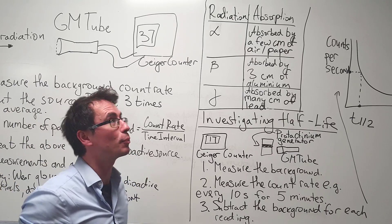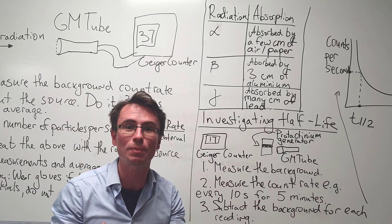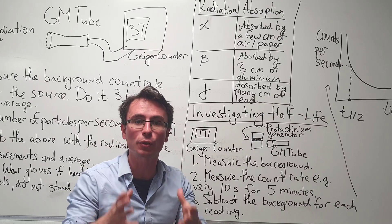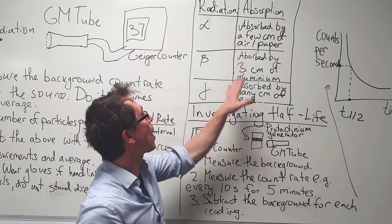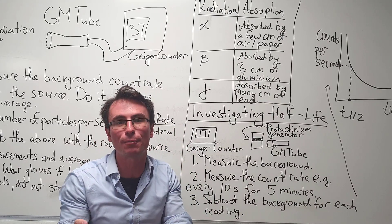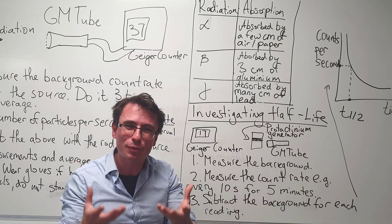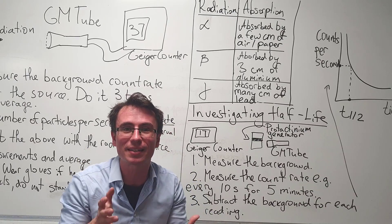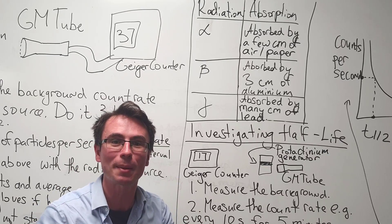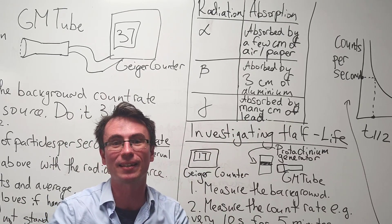Using this setup, we can also investigate the penetration power of different types of radiation. Alpha particles are absorbed by only a few centimeters of air or a sheet of paper. Beta particles are absorbed by approximately three centimeters of aluminum. And in order to absorb a lot of gamma radiation, we need lots of centimeters of lead.